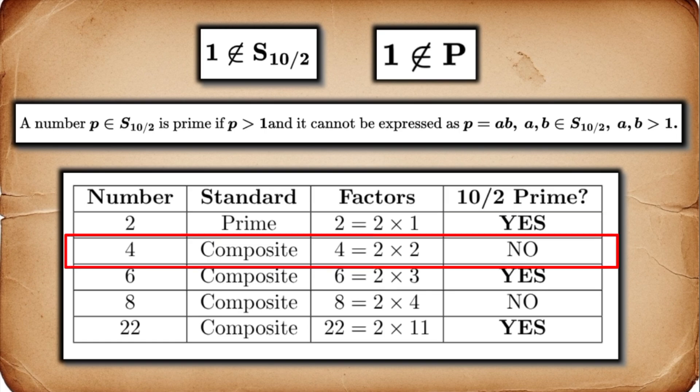Next, 4. Normally, composite. 4 equals 2 times 2. Let's check. Are both 2 and 2 in S10 over 2? Yes, this is a valid factorization within our system. Therefore, in the 10 over 2 system, 4 is composite.